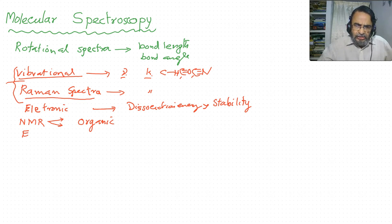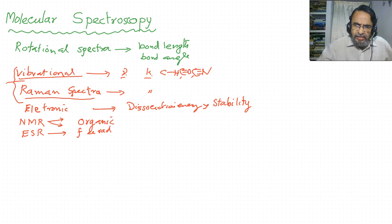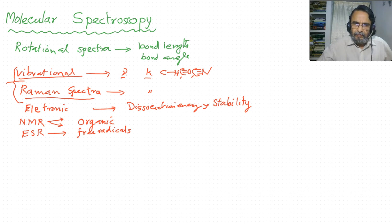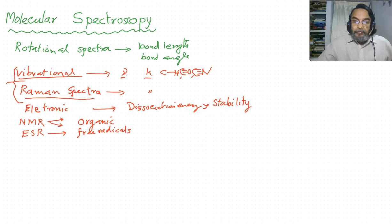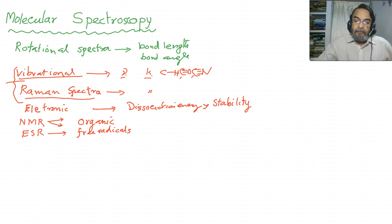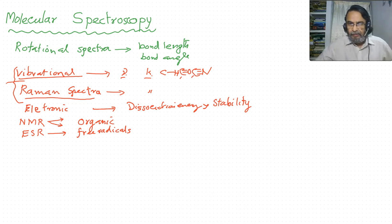The later-developed technique is ESR — electron spin resonance spectra — which is very suitable for free radicals. Free radicals can be studied, along with any molecule having a paramagnetic property, molecules having odd electrons, or molecules which are in the triplet state of an organic molecule. These can be studied using ESR spectra. We will study this in detail later.